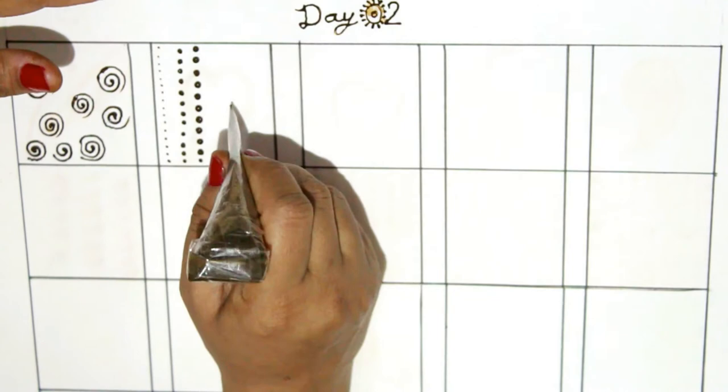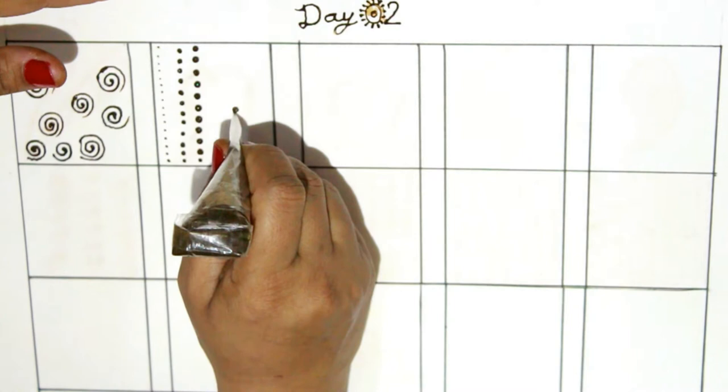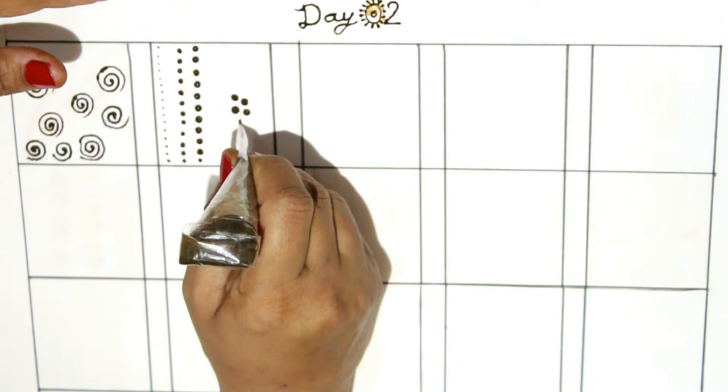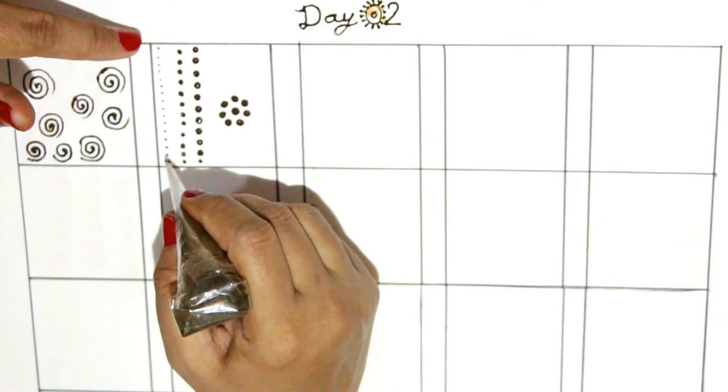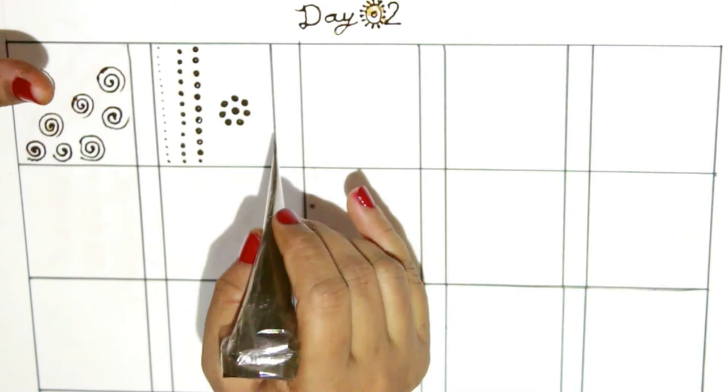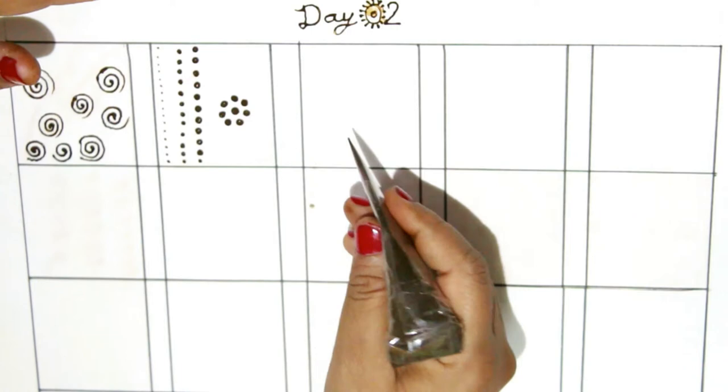Now with the help of dots, we will try making a dot smaller to the bigger ones. Dots are very useful in making many multiple designs.